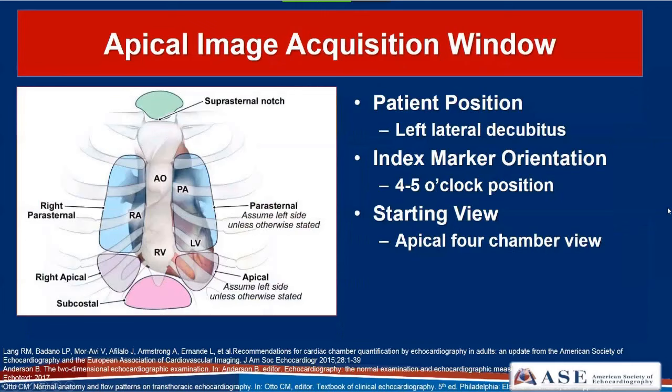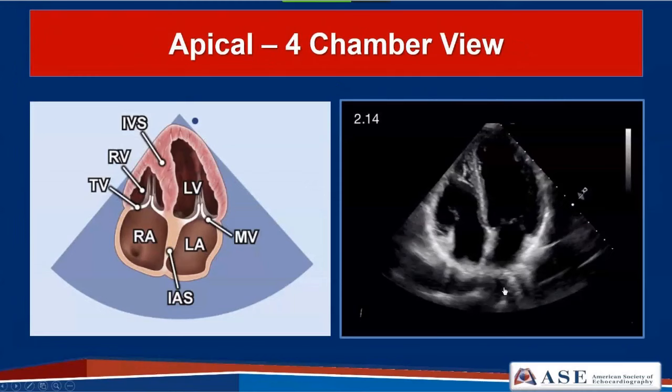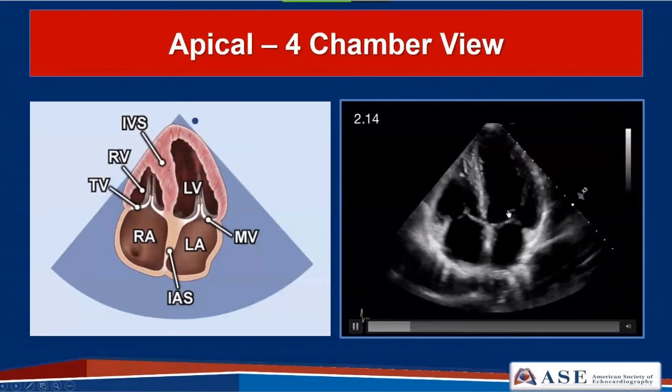The apical window also uses the left lateral decubitus position. It's best if you have a cutout bed so you can get the proper orientation to the apex. The index marker is pointed towards the four or five o'clock position, and the starting view is the apical four-chamber view. You'll often find the best window under the breast tissue and feeling for the apical impulse. In this starting view we'll see the left atrium, left ventricle, right atrium, and right ventricle.